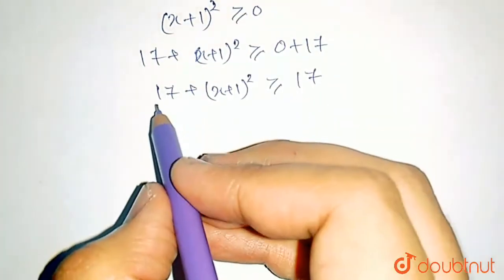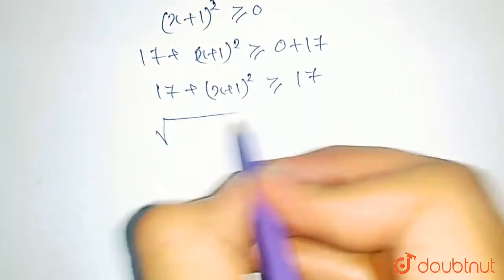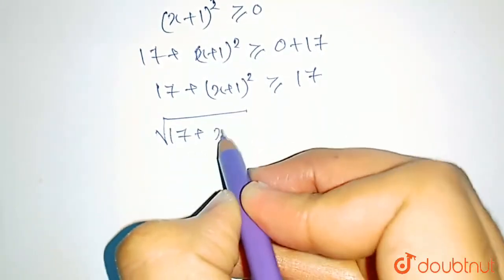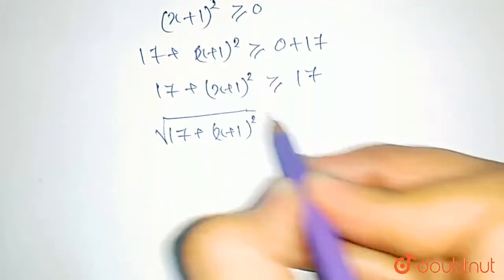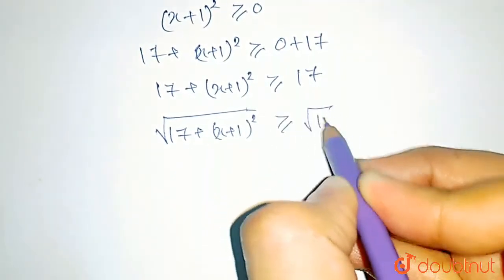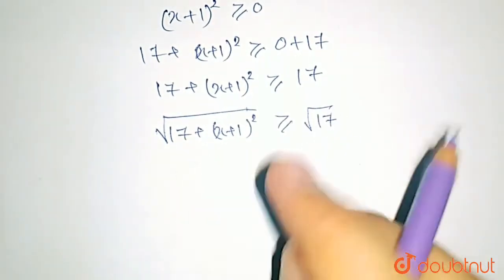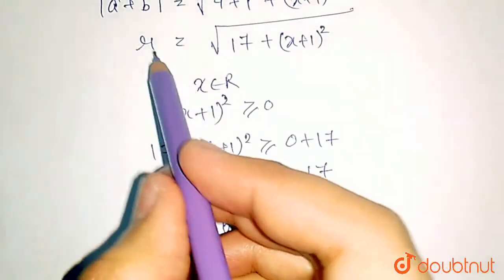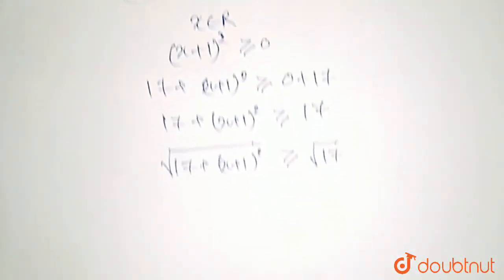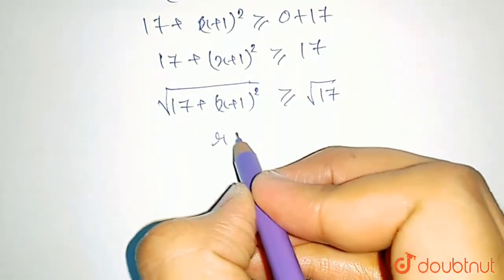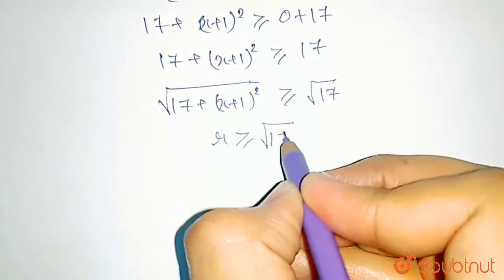Since both numbers are positive, we can take the square root on both sides. So, the square root of 17 plus (x plus 1) whole squared is greater than or equal to square root of 17. This is nothing but r. So, r is greater than or equal to square root of 17.